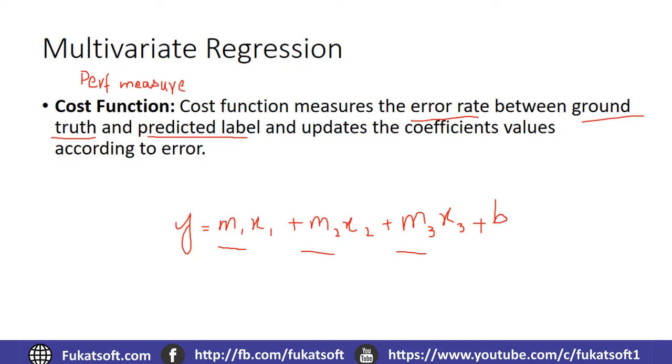But if our output value, which we have predicted, and our ground truth have a lot of difference, that means our parameters are not good. We need to update those parameters. What is happening is the cost function is telling us how good or bad we are. This is what the cost function does.